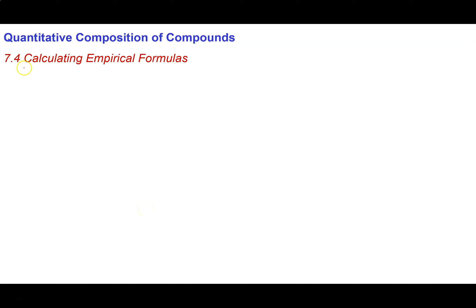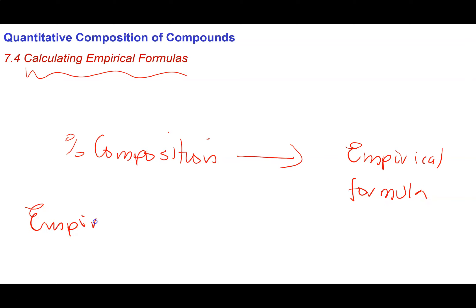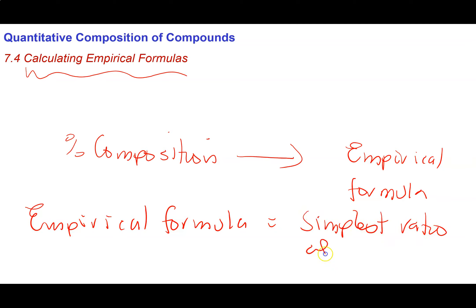In this video, I'm going to run through the procedure of calculating an empirical formula. We're going to take a percent composition and apply a four-step process to get what we call the empirical formula for our compound. The empirical formula is just the simplest ratio of the atom types that are present in your substance — it's the simplest ratio of atom types.